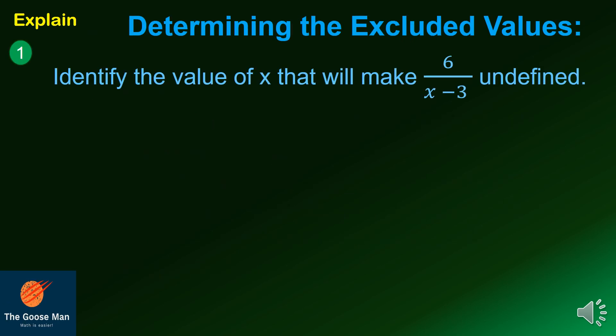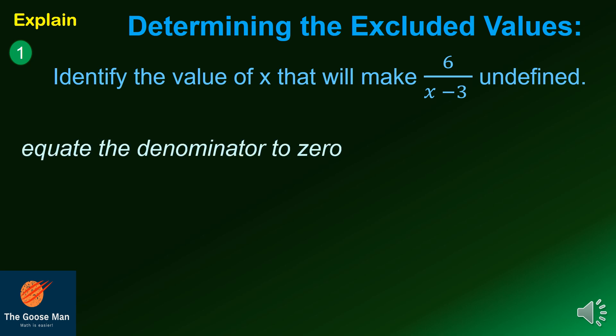Recall that the rational algebraic expression is a fraction such that the denominator is not equal to zero. You need to pay attention to what values of the variable will make the denominator equal to zero. These values are called excluded values. How are you going to determine the excluded values in a rational algebraic expression?